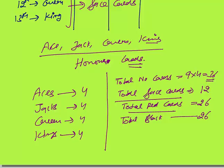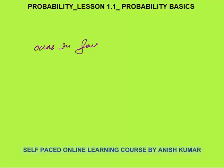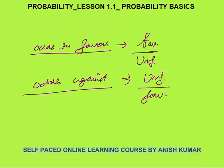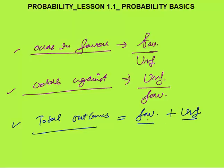The next concept is odds. Odds in favor of an event = favorable outcomes divided by unfavorable outcomes. Odds against an event = unfavorable outcomes divided by favorable outcomes. Note that total outcomes = favorable outcomes + unfavorable outcomes.